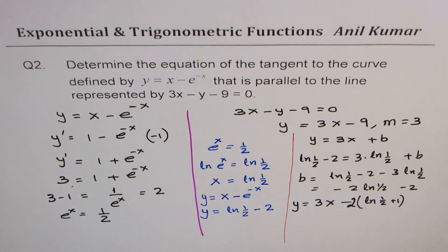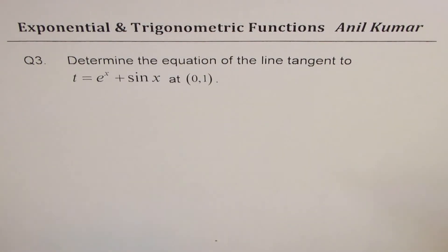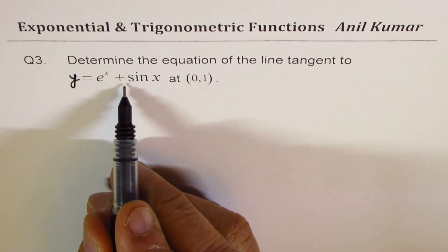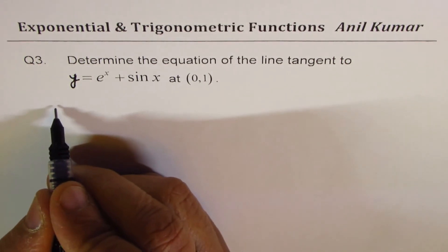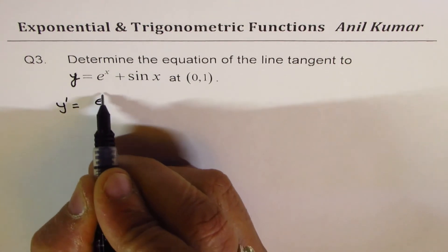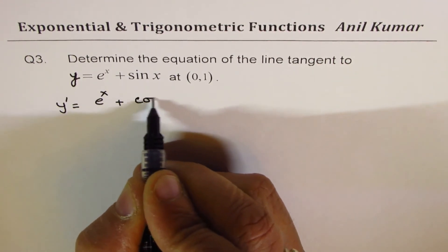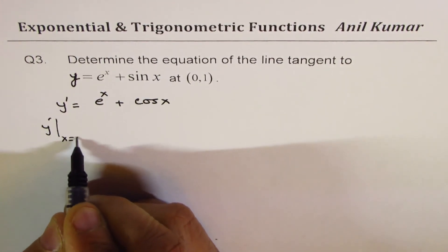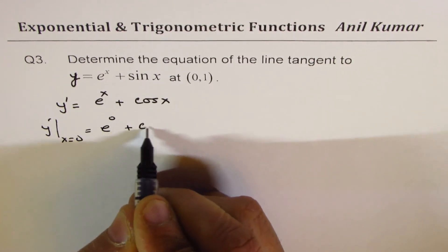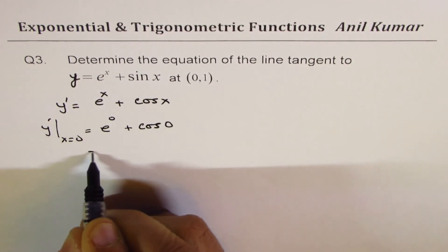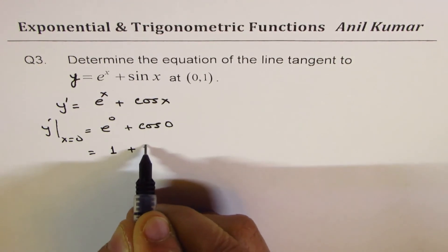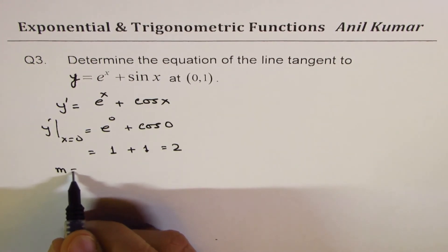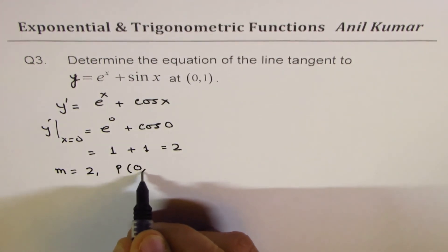Determine the equation of the line tangent to y equals e to the power of x plus sin x at (0, 1). The derivative of this function is e to the power of x plus cos x. At x equals 0, the derivative is e to the power of 0 plus cos 0, which is 1 plus 1, giving us 2. So the slope is 2.